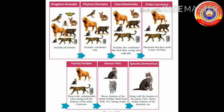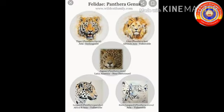As another example, the lion belongs to kingdom Animalia, phylum Chordata, class Mammalia, order Carnivora, and family Felidae. However, it belongs to genus Panthera and species leo.